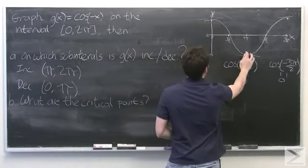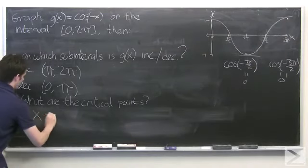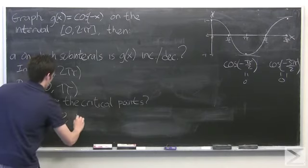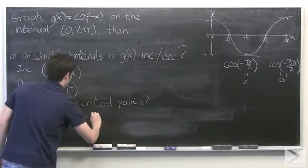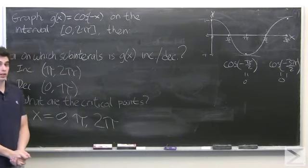So it's clear from this that we have three different critical points. One here, one here, and one here. So critical points are x equals 0, x equals pi, and x equals 2 pi. Good stuff. And that's the end of the problem.